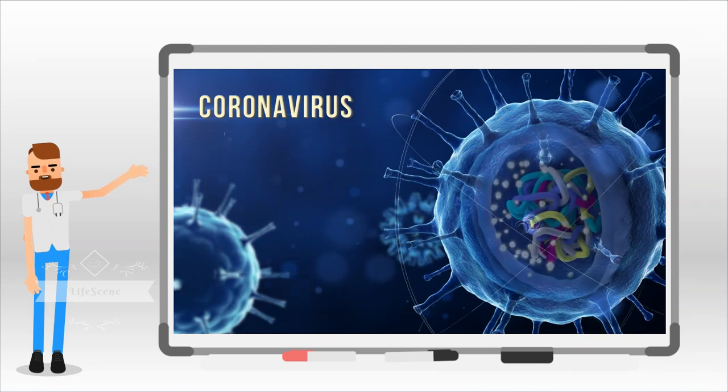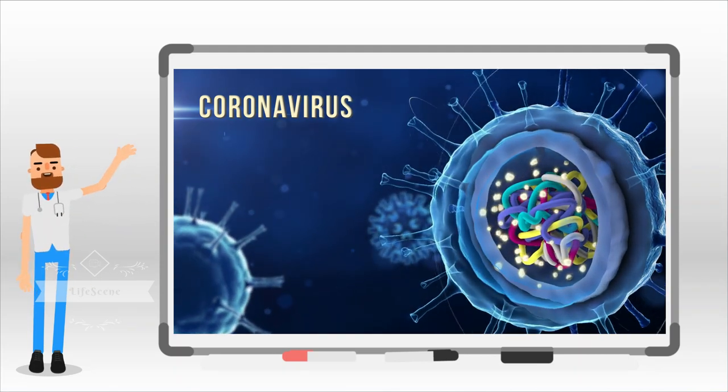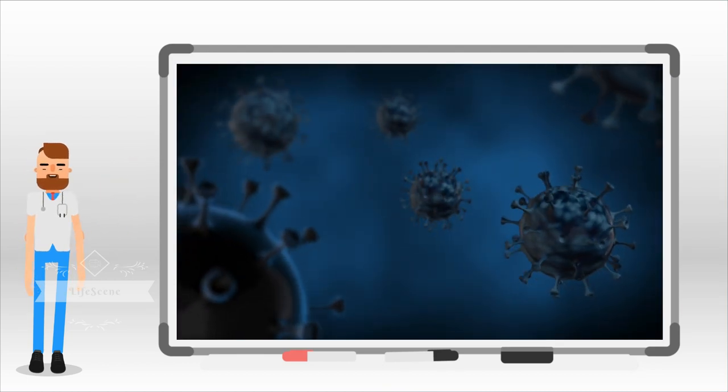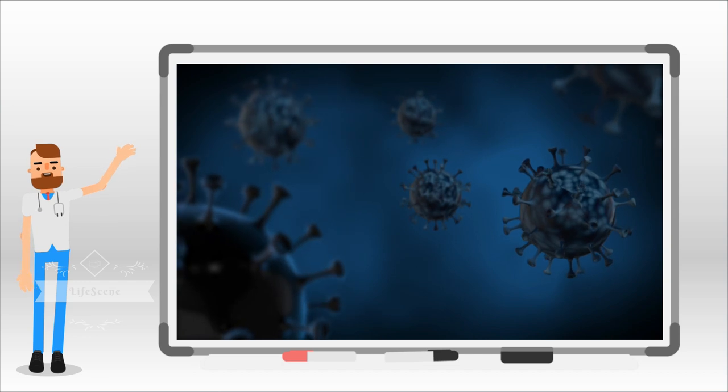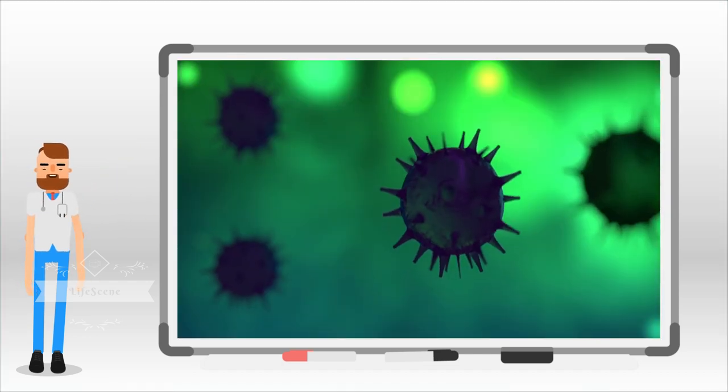Coronaviruses are a large group of viruses that consist of a core of genetic material surrounded by an envelope with protein spikes. This gives its appearance of a crown. The name coronavirus is derived from Latin word corona, meaning crown. That's how these viruses got their name.